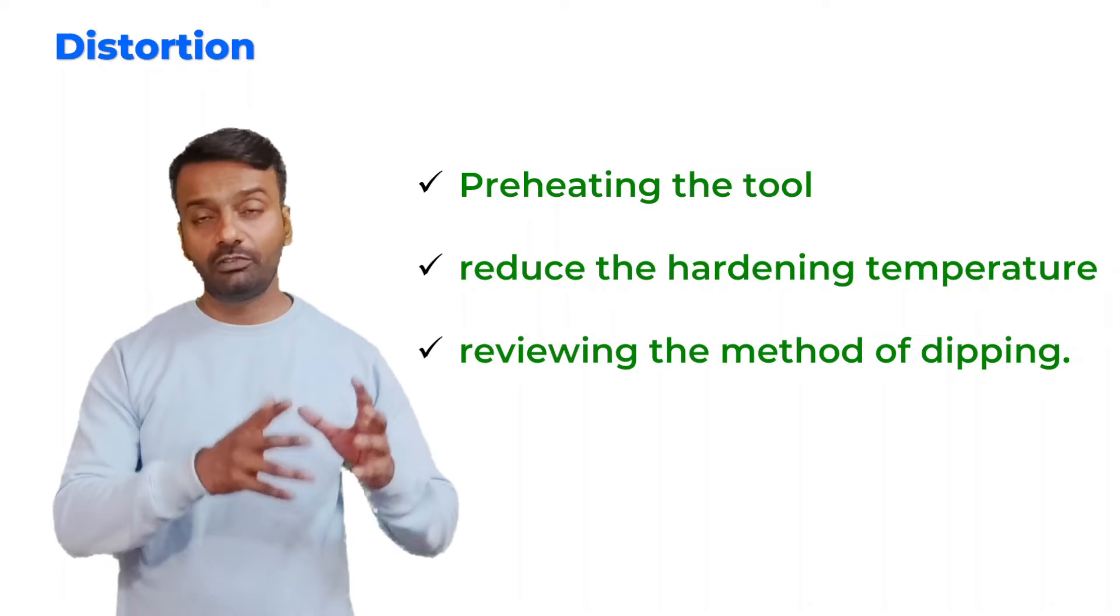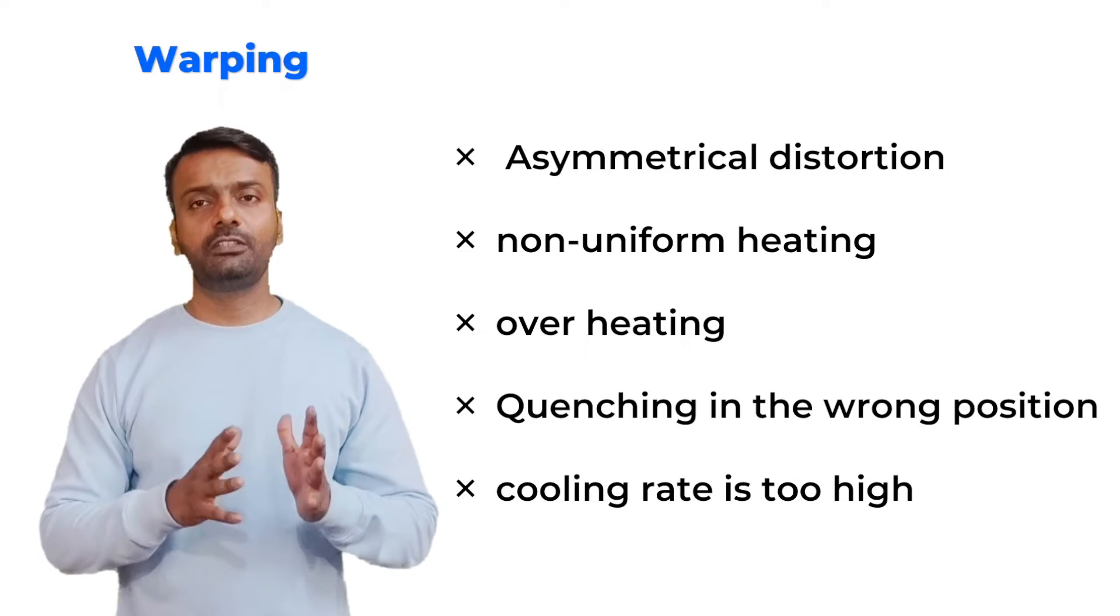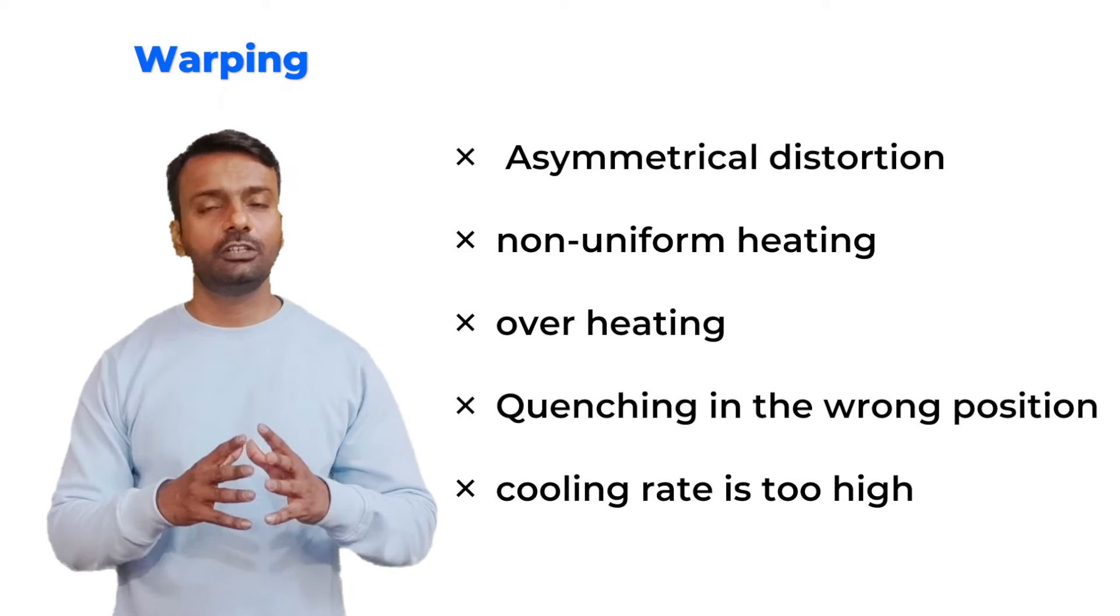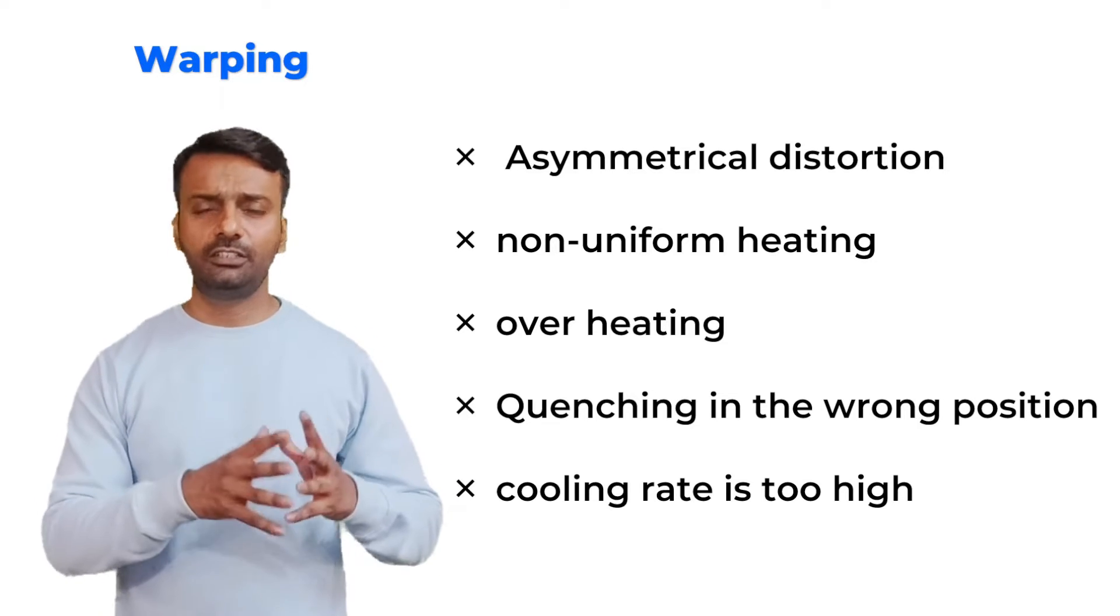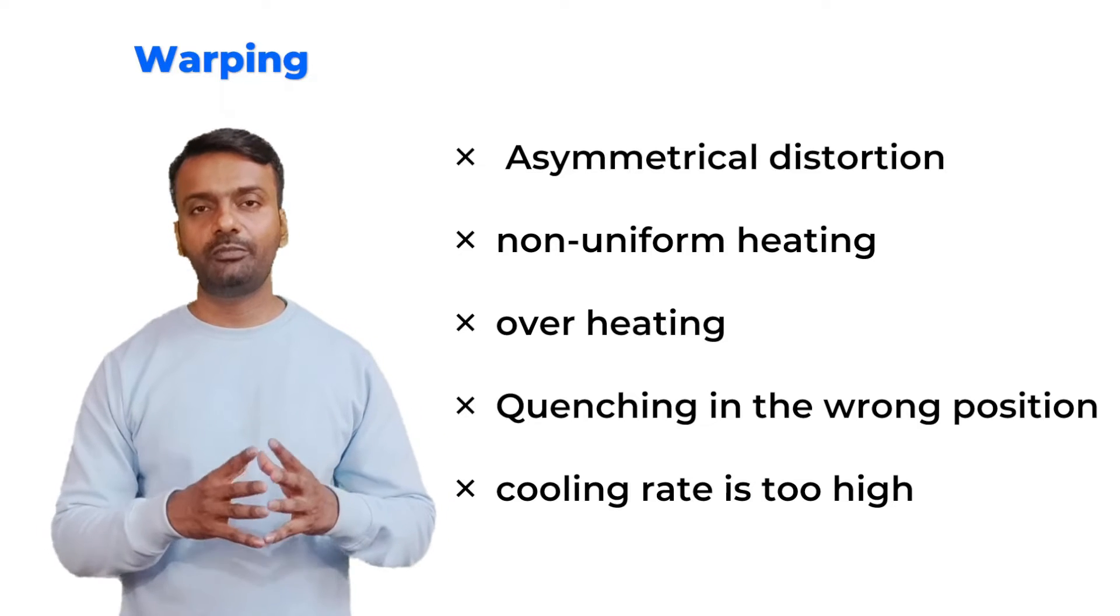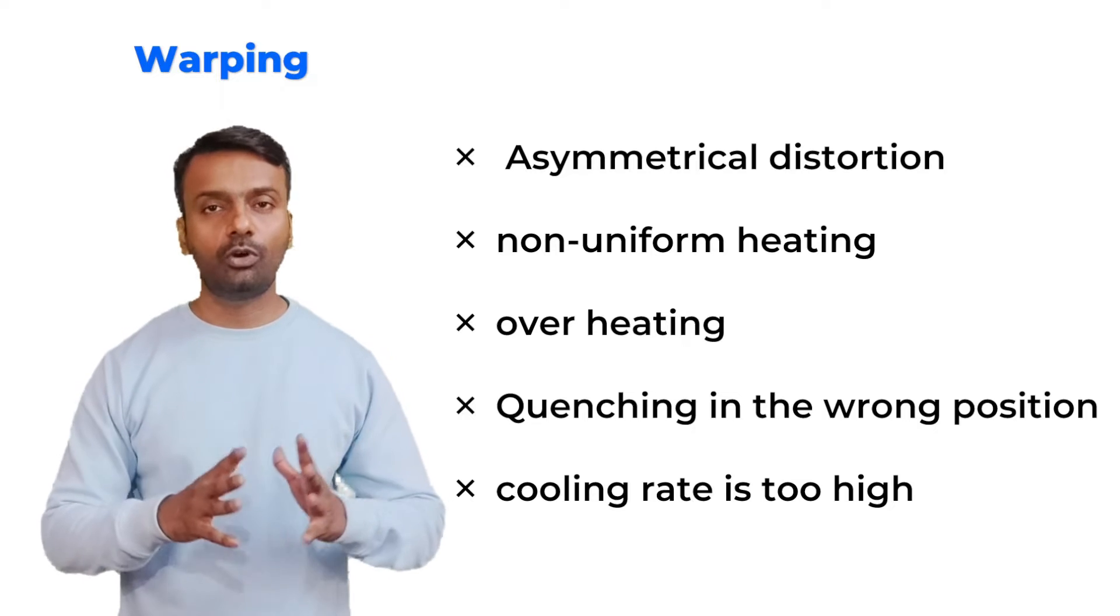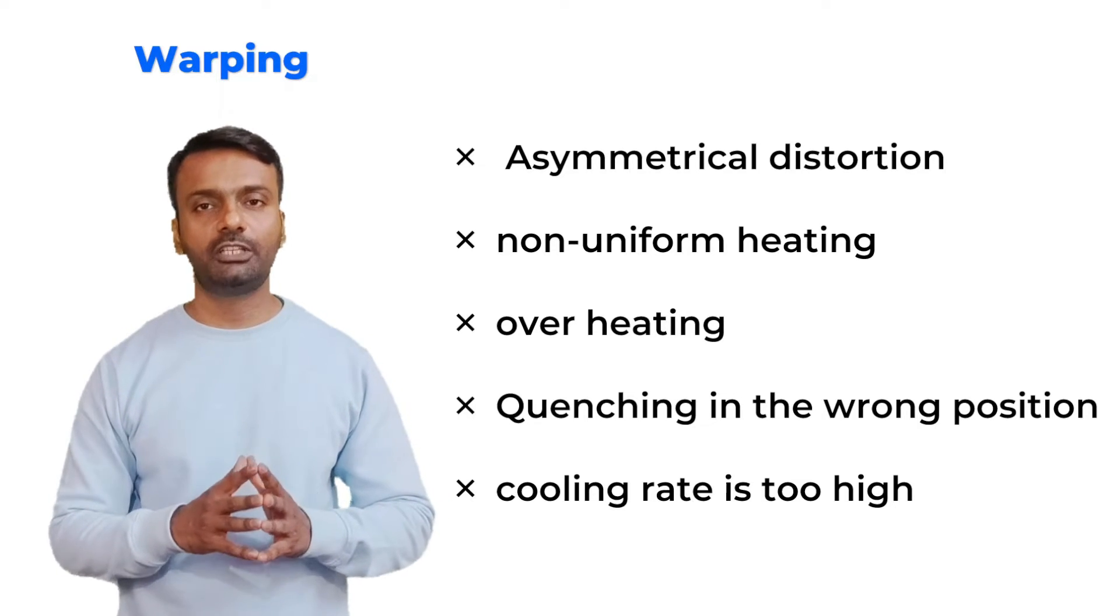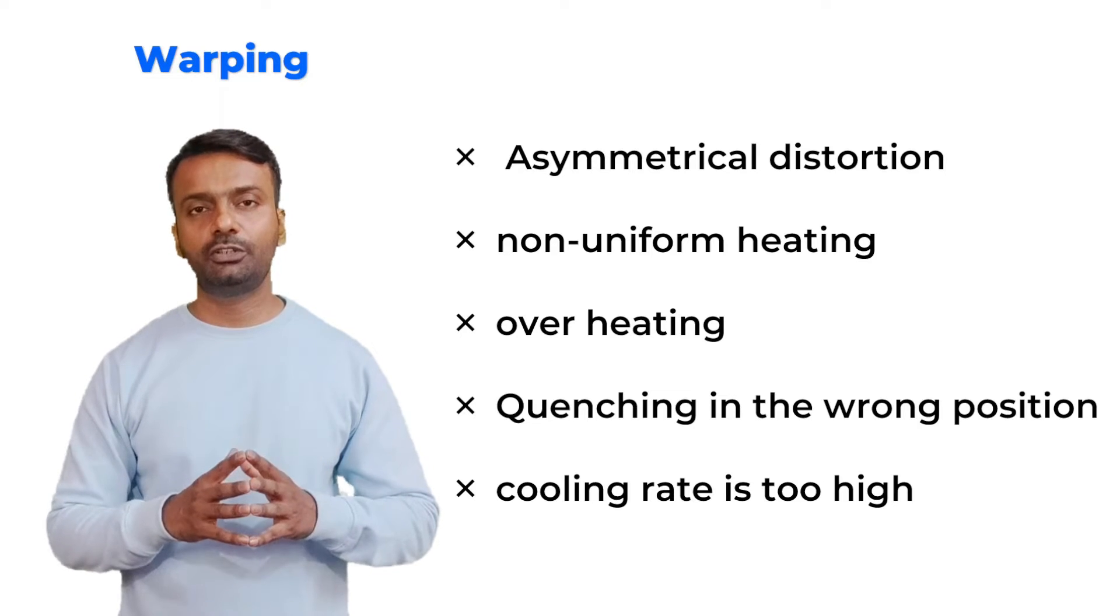Next is warping. Warping means asymmetrical distortion. Here, the distortion is happening, but the shape is also changing. This is considered a defect because when you are doing heat treatment, you want the sample to have the same shape and size after the heat treatment. You don't want the sample to change the shape or size. So warping is undesirable.